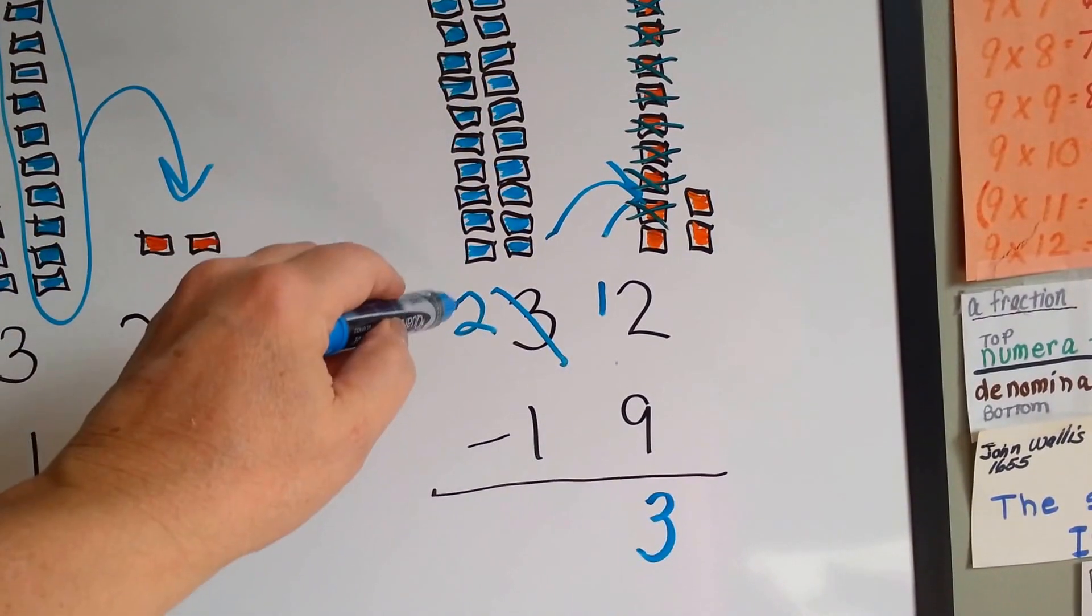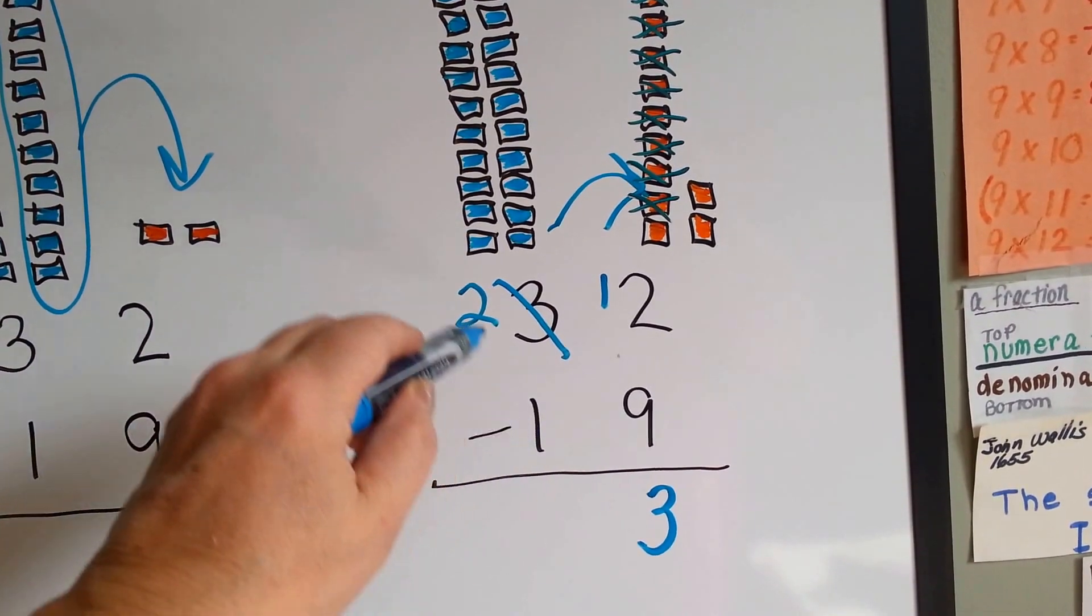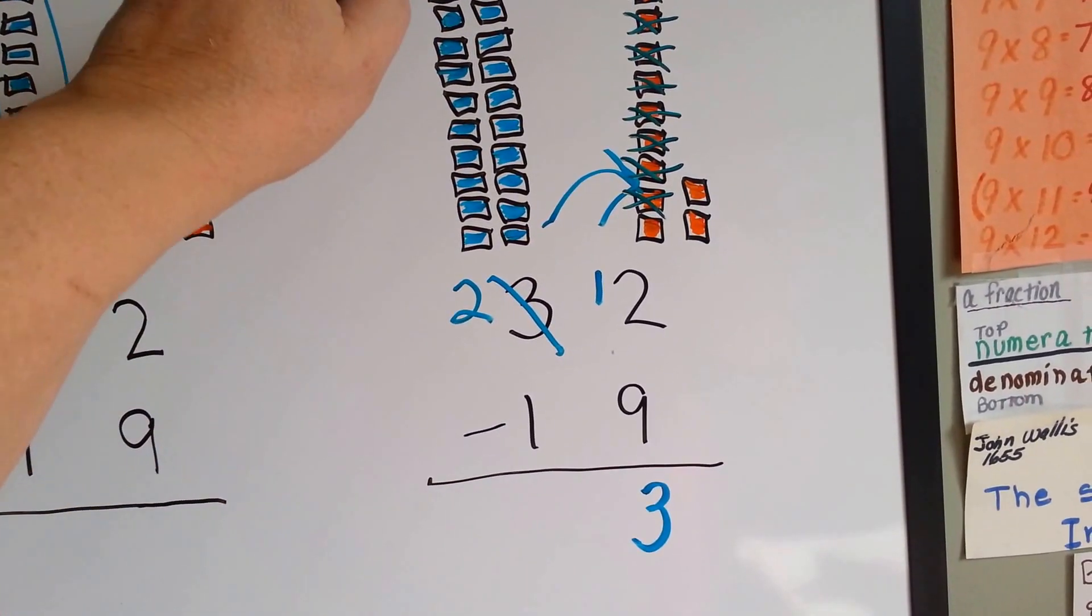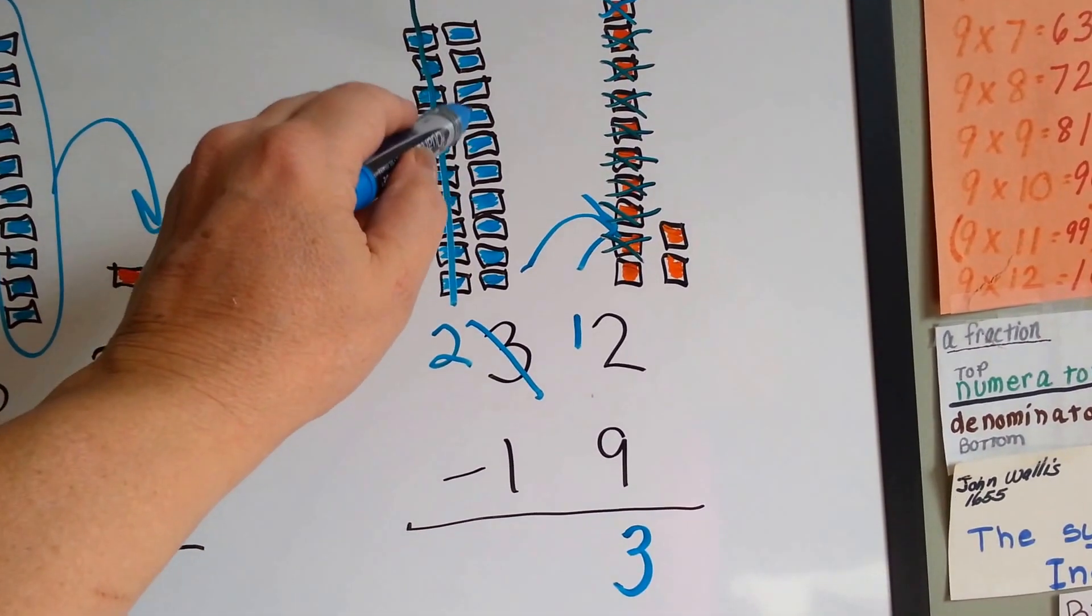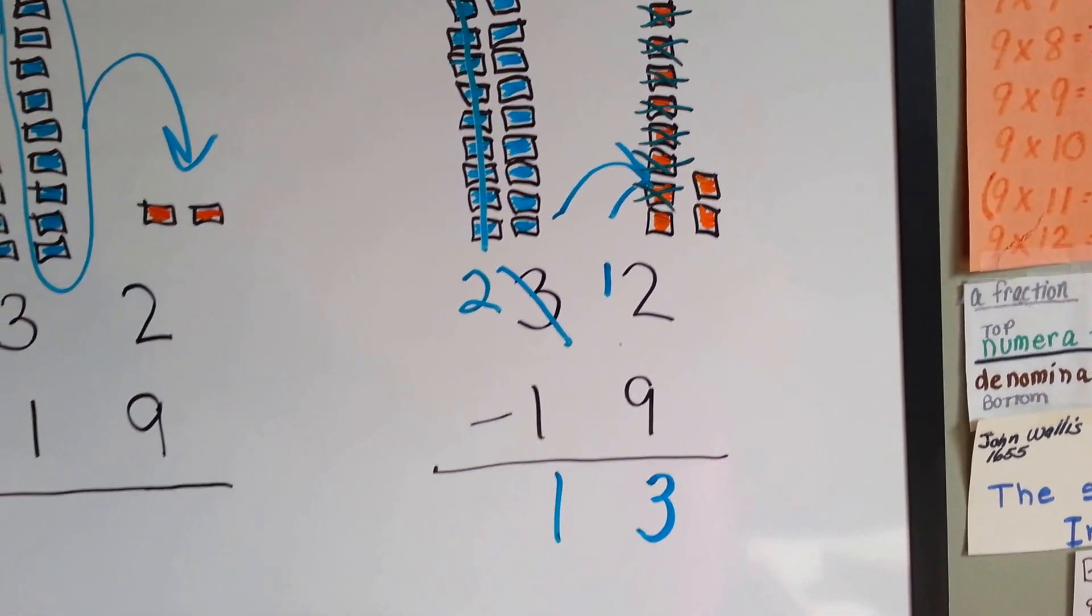And then the two tens that are here, see? Take away 1. If you take away one of them, that's only going to leave this one left. So our answer is 13.